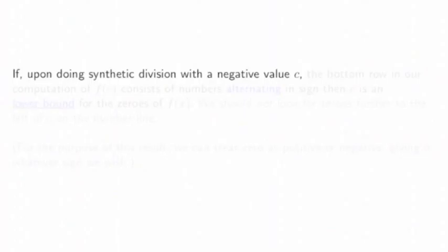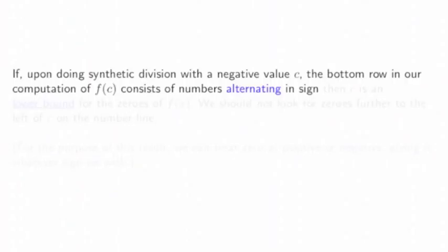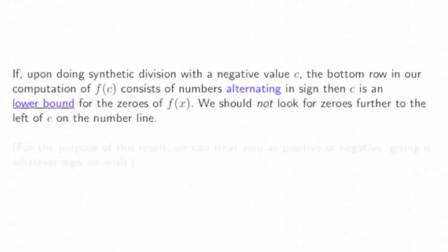If, upon doing synthetic division with a negative value c, the bottom row in our computation consists of numbers alternating in sign—plus, minus, plus, minus, and so on—then c is a lower bound for the zeros of f(x). We should not look for other zeros further to the left of c on the number line.